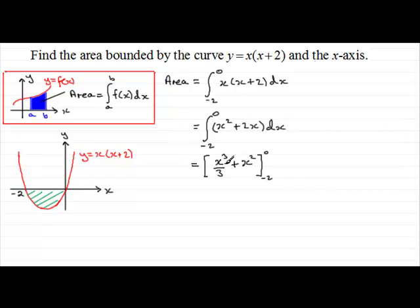Substitute our limits in, starting with 0 for x, and we get 0 here plus another 0, so that's 0 overall. Subtract what we get when we substitute the minus 2 in for x. So we get minus 2 cubed over 3, that's minus 8 thirds, and then we have plus minus 2 squared, so that's plus 4. Work this out. Minus 8 thirds plus 4 is 4 thirds. We've got a minus out here, so what we end up with is minus 4 thirds. So we've got area equals minus 4 thirds.